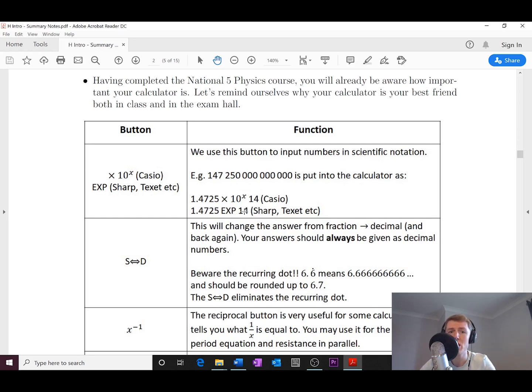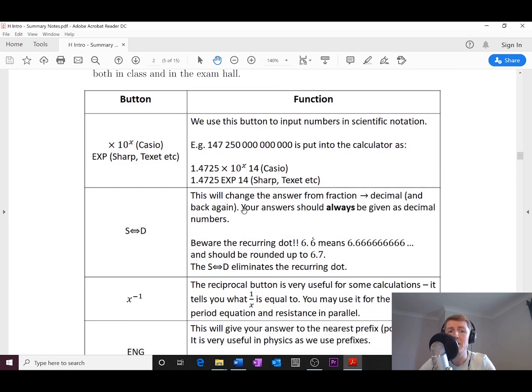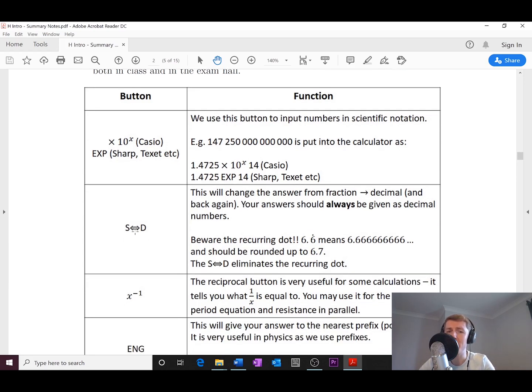Hopefully you remember that. There is the S↔D button as well, so this can change your fractions to decimals and back again. There is a certain mode on your calculator you can set it to which will just output your answers in decimals anyway. Remember that you should always avoid using the recurring dot. We don't deal with fractions or the recurring dot in physics. We tend to use decimals and we round our answers, so make sure you don't put the recurring dot in your answers.